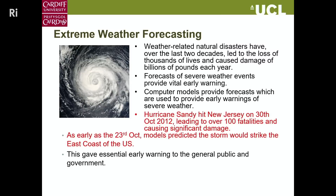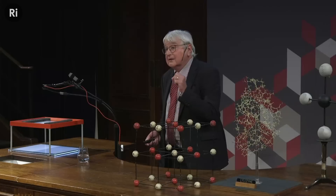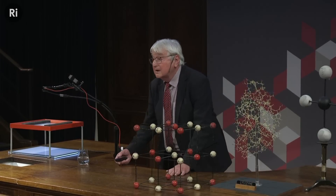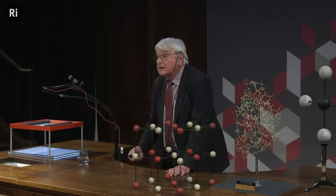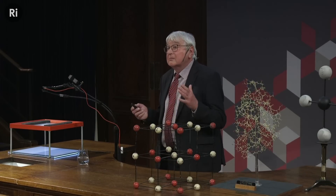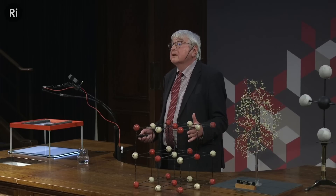Extreme weather forecasting is absolutely vital and computer modelling plays a key role here. This is an example of a prediction made of a hurricane some years ago. If we can predict when these extreme weather events take place, then mitigating action can be taken. The predictions we make about climate change are based on detailed computer models.